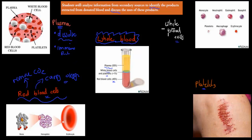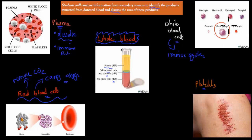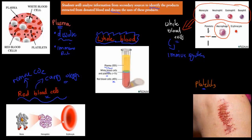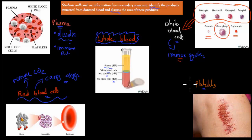We also have white blood cells — these are our immune system. You can imagine them to be the police of our body; they make sure that any foreign invaders are killed. These include macrophages, monocytes, neutrophils, basophils — all white blood cells. They are a lot bigger than platelets and erythrocytes, which are red blood cells, but they all help protect our body from foreign invaders. And we also have platelets, which are responsible for blood clotting.